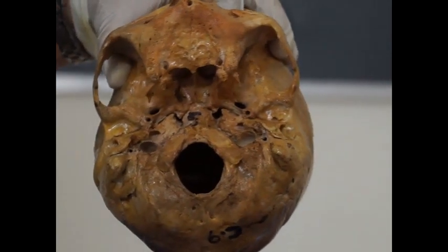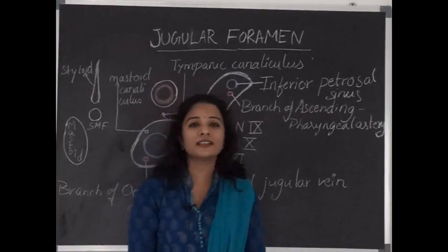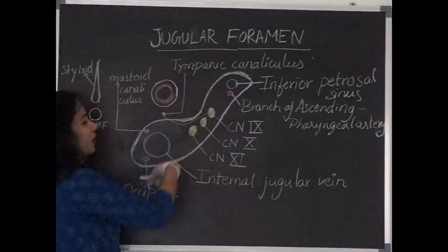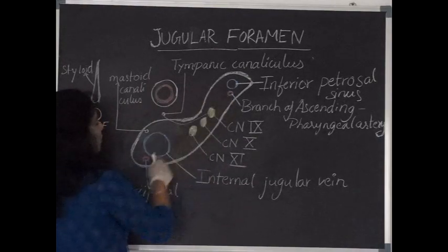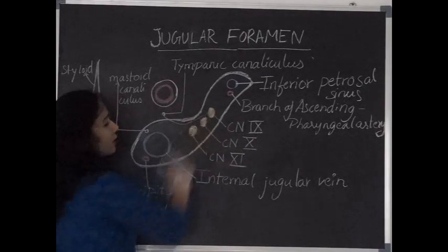Let us see the structures passing through each foramen. Jugular foramen is a large irregular shaped foramen and we can divide into three parts, anterior part, posterior part which are the venous compartments and intermediate part is the nervous compartment.